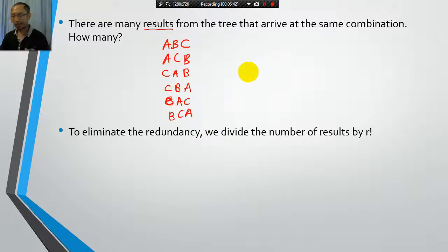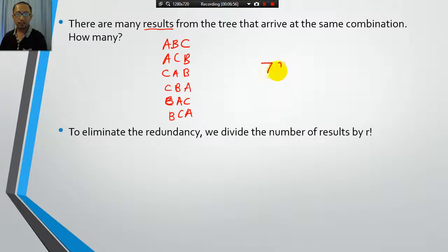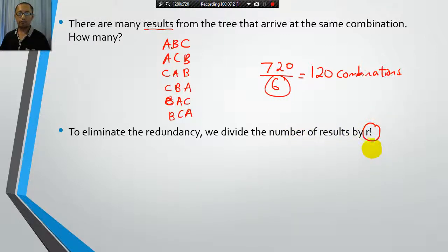We have to divide this by 6 to give us the number of combinations, which is 120. Right? Now, where does the number 6 come from? Well, the number 6 comes from r factorial. Right? Because remember, r is 3. So we're picking 3 letters. Now, how many ways are there of rearranging 3 letters? 3 factorial.